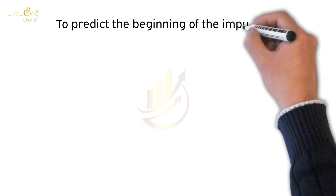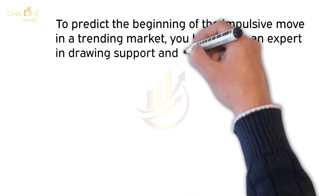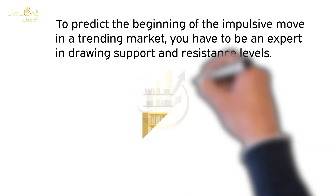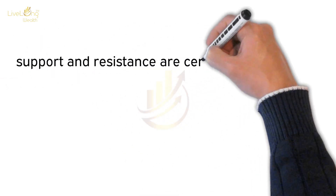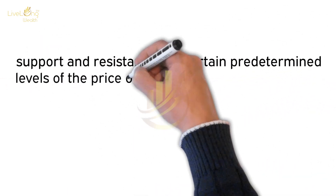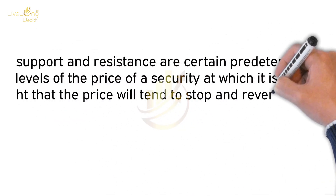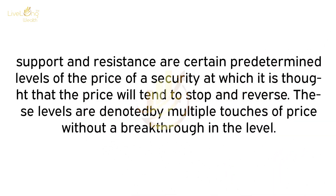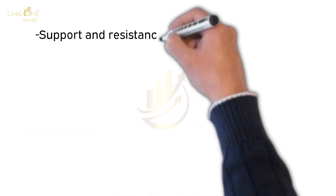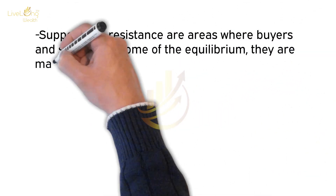To predict the beginning of the impulsive move in a trending market, you have to be an expert in drawing support and resistance levels. Support and resistance are certain predetermined levels of the price of a security at which it is thought that the price will tend to stop and reverse. These levels are denoted by multiple touches of price without a breakthrough. Support and resistance are areas where buyers and sellers find equilibrium — they are major turning points in the market.